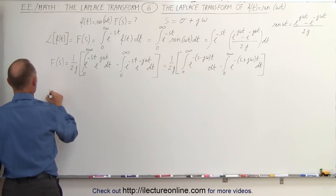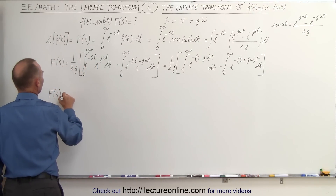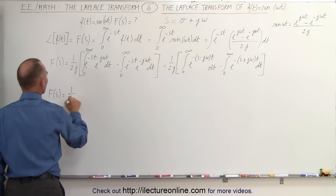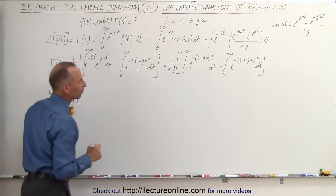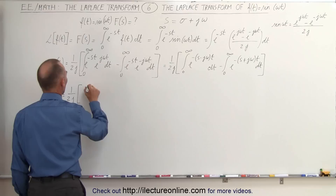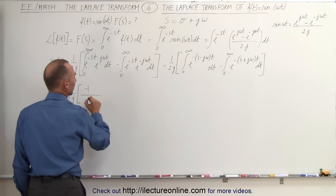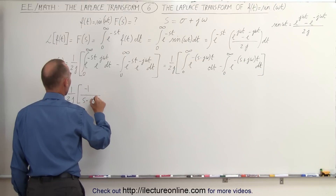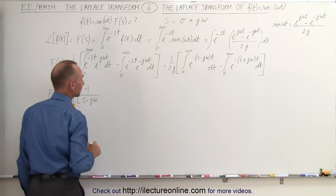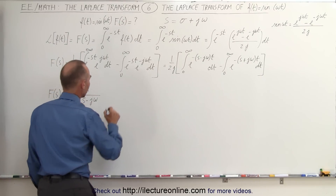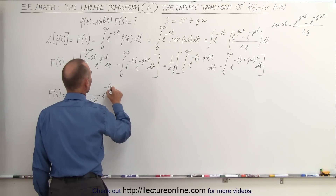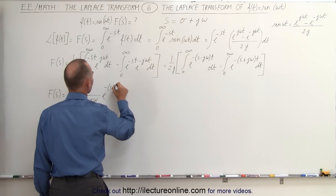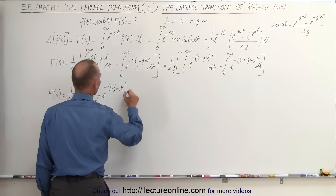So now we can go ahead and integrate those. F of s is equal to 1 over 2j times: the first integral gives negative 1 over s minus j omega, times e to the minus quantity s minus j omega times t, evaluated from 0 to infinity.